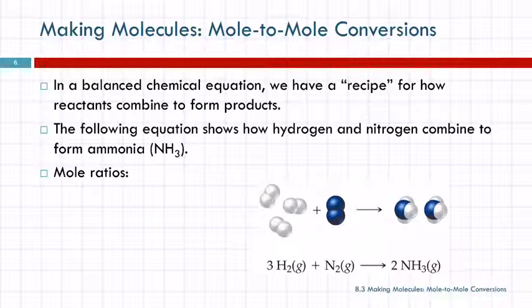Like making pancakes, right? You take certain amounts of ingredients, except we call them reactants, and they combine and they form our product. But the product is a chemical instead of a pancake. So from this equation, we can get mole ratios because we don't measure things in numbers of atoms and numbers of molecules because the numbers end up being way too large. And so we use the chemist's dozen, the mole.